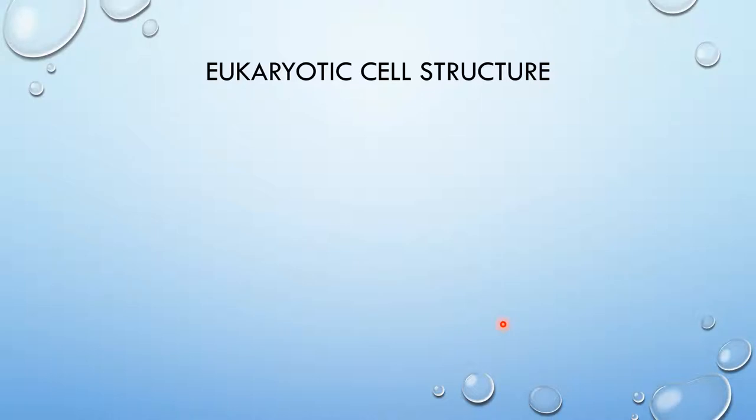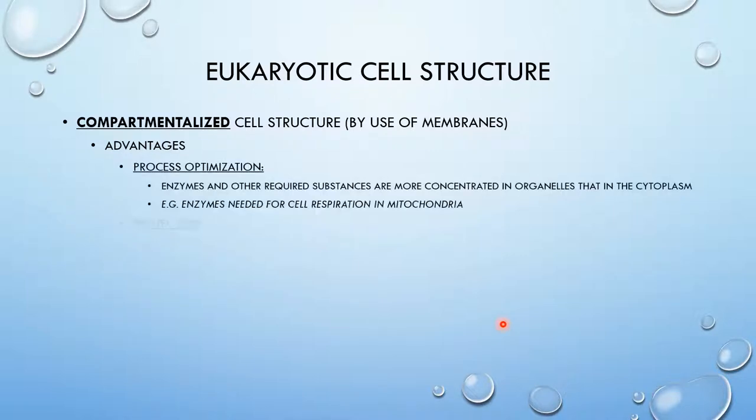Eukaryotic cell structure. Eukaryotic cells are compartmentalized, which means that they have compartments. They're more specialized and they have a more complex structure by the use of membranes. The advantages of compartmentalization are as follows.